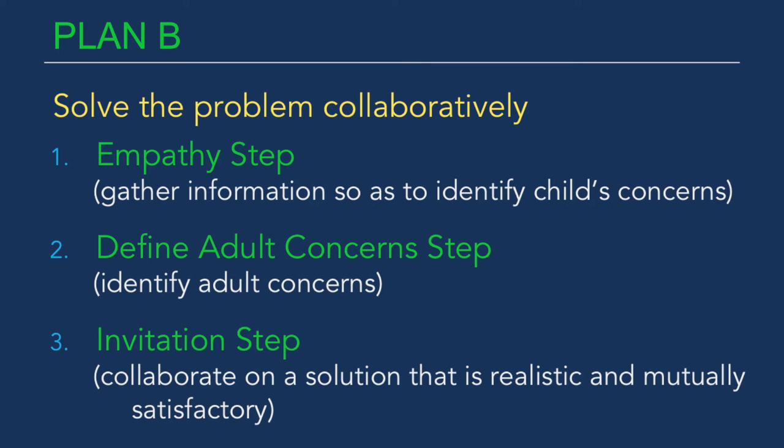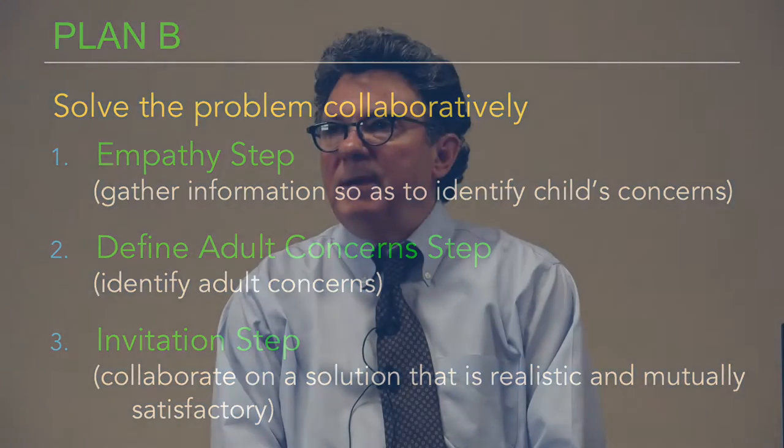Solving a problem collaboratively involves three steps. Those three steps are called the Empathy Step, the Define Adult Concern Step, and the Invitation Step. The names of the steps don't actually matter very much — the ingredients of the steps matter a great deal. What is the main ingredient of the Empathy Step? Information gathering. Gathering information from the student so that you can understand what's making it hard for that kid to meet the expectation. Kids have information we badly need — information about what's hard, what's getting in the kid's way, the kid's concern, perspective, point of view. If we do not get that information, the kid's concern will remain unknown and unaddressed, and this problem will remain unsolved. The Empathy Step is where you're going to get it.